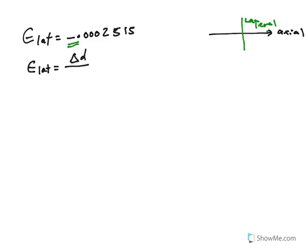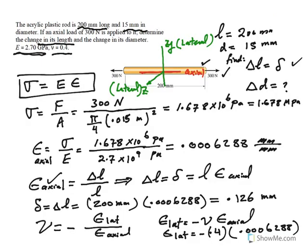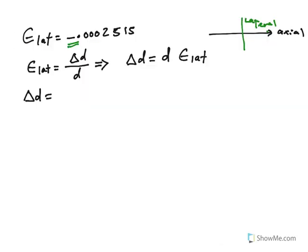Next, in the lateral direction, epsilon lateral is change in diameter divided by diameter. So in this case, we can go ahead and find change in the diameter then. So we just take the diameter and multiply it by epsilon lateral. So change in diameter would be, remember, the diameter was 15 millimeters. And the lateral strain is negative 0.002515. So we're going to end up getting contraction along the diameter.